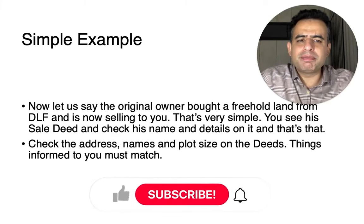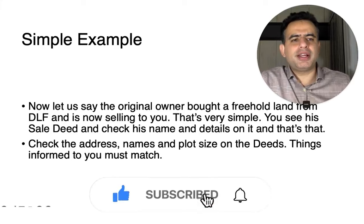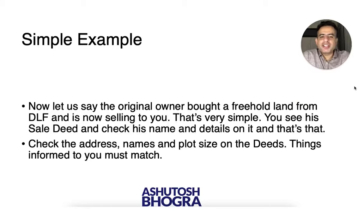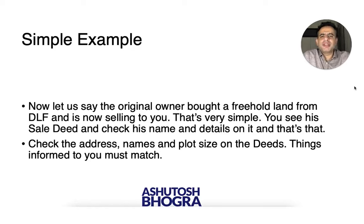Let's take a simple example. Say the original owner bought freehold land from DLF — for example in GK2, DLF sold it as freehold land. Say somebody bought it from DLF and is now selling to you a plot of 500 square yards or whatever. You see that sale deed and check: Mr. Aroda or Mr. Gupta — whoever is sitting in front of you — his name is there on the deed as the buyer. His photo would also be there.